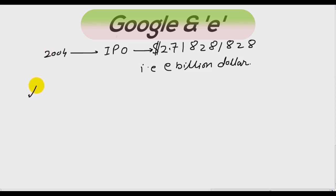Now the last, as I told you about the connection of Google and e. So in year 2004, when Google announced its IPO, initial public offering, they announced to raise $2,718,281,828 dollars. And the reason is they wanted to give respect to e. So this is actually e.